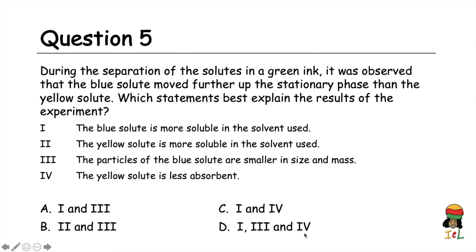Question five: during the separation of the solutes in a green ink, it was observed that the blue solute moved further up the stationary phase than the yellow solute. Which statements best describe the results? One: the blue solute is more soluble in the solvent used. Two: the yellow solute is more soluble in the solvent used. Three: the particles of the blue solute are smaller in size and mass. Four: the yellow solute is less absorbent. Options — A: one and three. B: two and three. C: one and four. D: one, three and four. The answer is A, one and three.